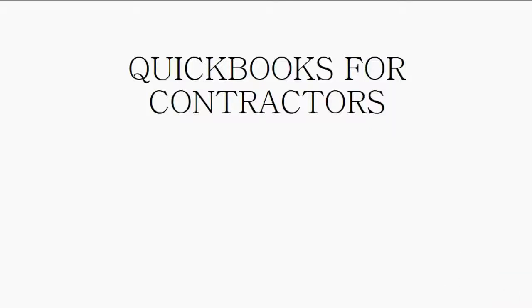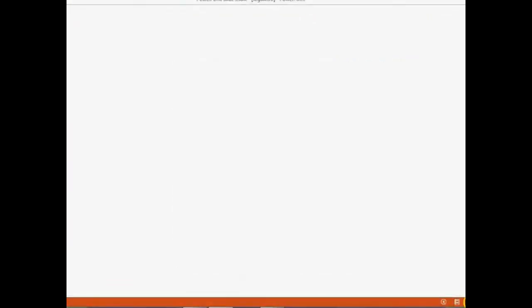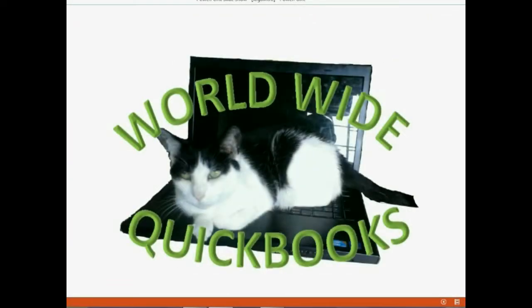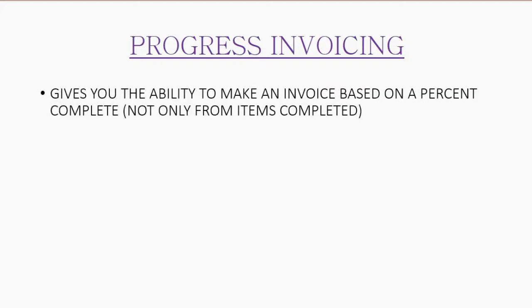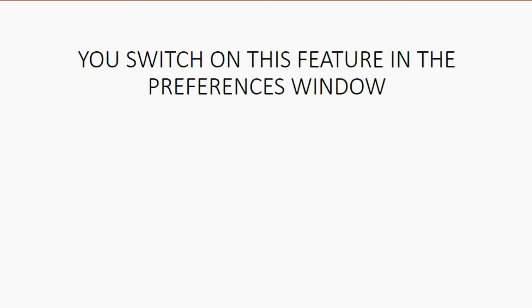Very often you will have to make several invoices for one estimate. In that case, it would be very good to turn on the progress invoicing feature in QuickBooks. Progress invoicing gives you the ability to make an invoice based on a percent complete, not only from the items completed. It also gives you reports that show the percent complete after each invoice.